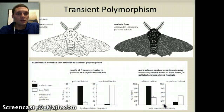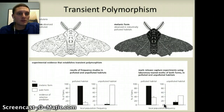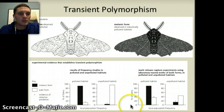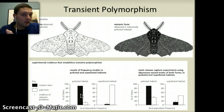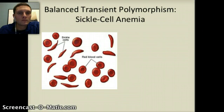Scientists have been able to recreate and reproduce these same results in experimental labs and simulations, in which darker alleles for moth color were prevalent in the polluted habitat, whereas lighter moths were prevalent in the unpolluted habitat.